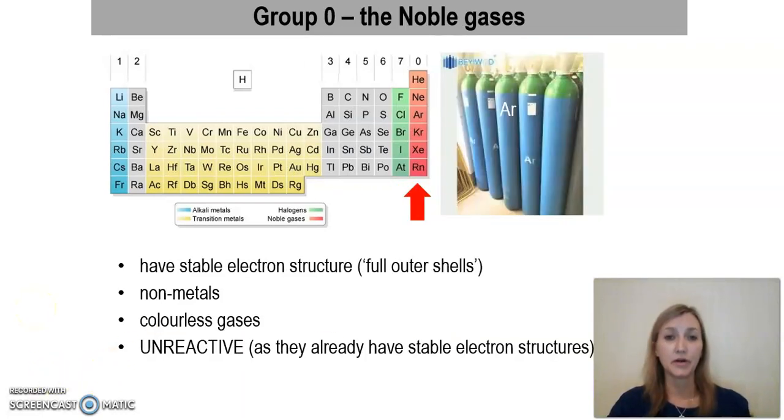The next group we're going to look at are Group 0, the noble gases. They're found at the right-hand side of the Periodic Table, and range from helium down through to radon on the right-hand side. Again, some of these gases you may have heard of, such as helium and neon in particular.